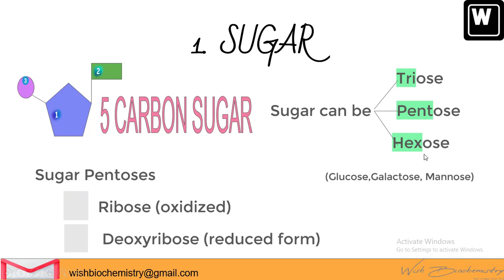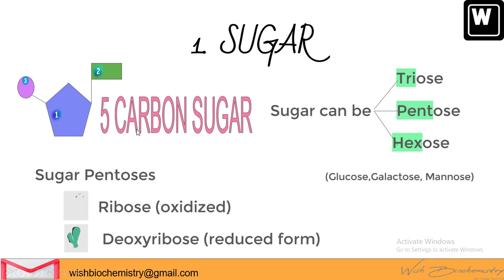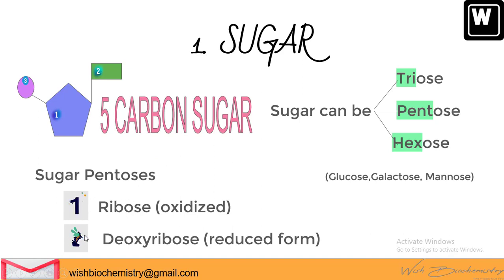Hex is for 6-carbon sugars. There are many important hexoses in the body like glucose, galactose, and mannose. The sugar present in the nucleotide is the 5-carbon pentose sugar. There are two types of pentoses: ribose and deoxyribose.